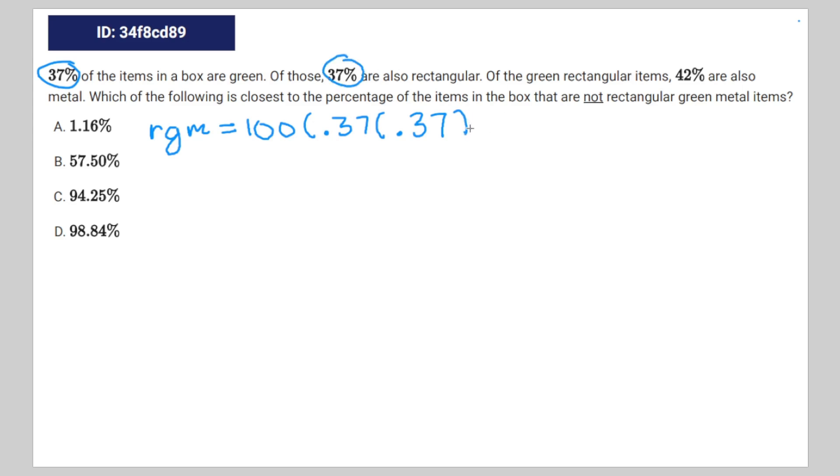And again, then finally by 0.42 to represent the third percentage. That's going to leave you with rgm equals 5.75. But that's going to give you the percentage of the items in the box that are rectangular green and metal.